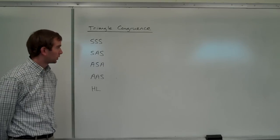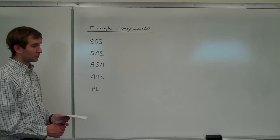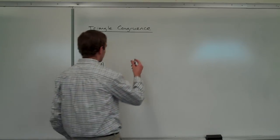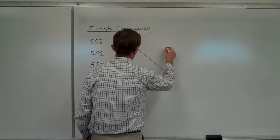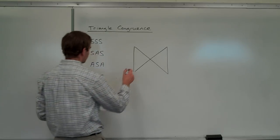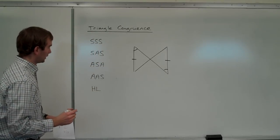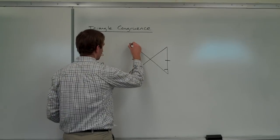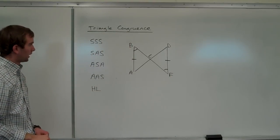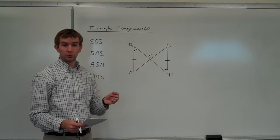I want to go over three pretty quick examples of where you'll see these postulates and theorems in action when you're trying to prove that two triangles are congruent to each other. Let's start with a diagram here. Say you have something that looks like this, and I'm telling you already that those two angles are congruent and that side is congruent. We'll label these points A, B, C, D, and F. I want you to tell me: are these two triangles congruent, and if so, how do you know?